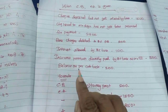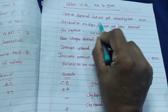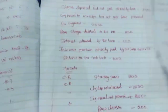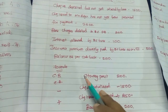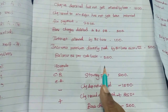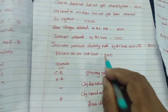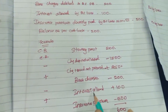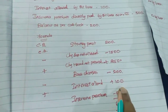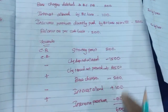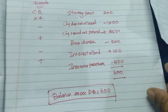Starting point: balance as per cashbook is Rs. 200. Check deposited but not collected — minus Rs. 1,500. Check issued to Mr. Roger not presented for payment — check issued but not paid, plus symbol — plus Rs. 2,500. Bank charges debited in the passbook — debit by bank — minus Rs. 200. Interest allowed by the bank — credit by bank — Rs. 100. Insurance premium directly paid by the bank — debit by bank — minus Rs. 500. Solving this gives a balance as per passbook of Rs. 600.